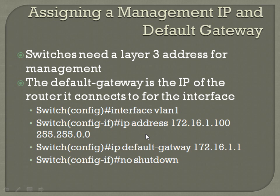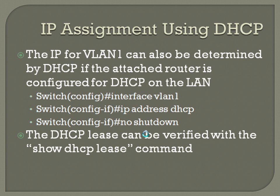You can also use DHCP for IP assignment. The IP for VLAN 1 can be determined by DHCP if the attached router is appropriately configured for DHCP on the LAN. From switch interface VLAN 1, enter 'ip address dhcp' then 'no shutdown'. The router will give the switch the correct IP address as well as the default gateway. The DHCP lease can be verified with the 'show DHCP lease' command, which shows MAC addresses with IPs, lease durations, and how long until the lease expires.